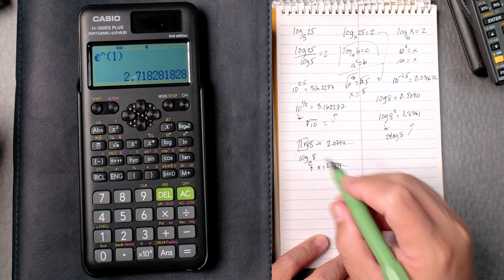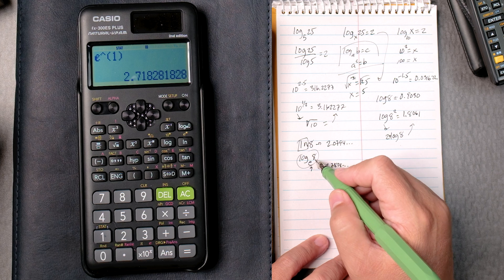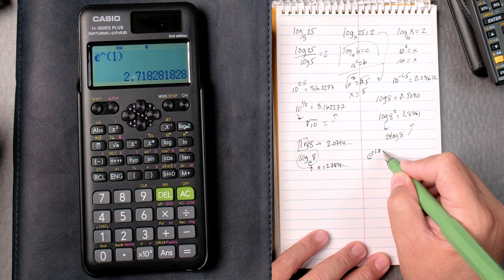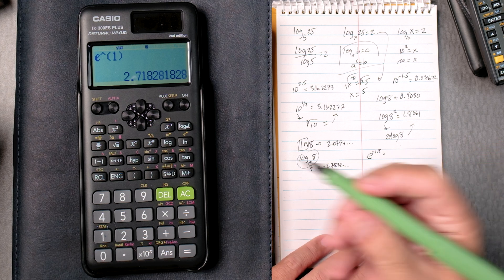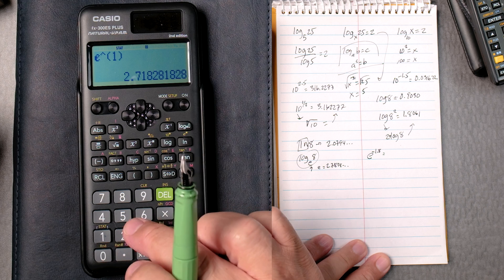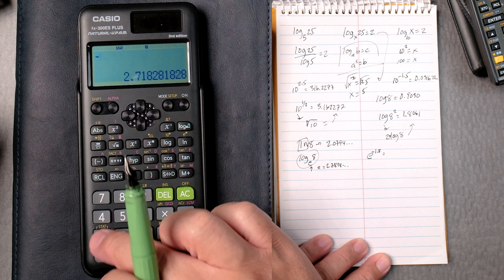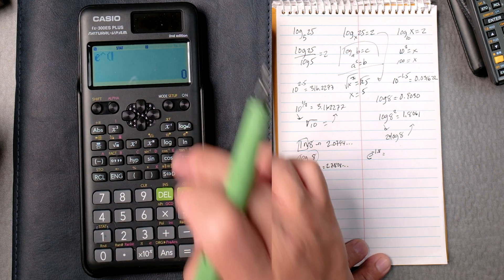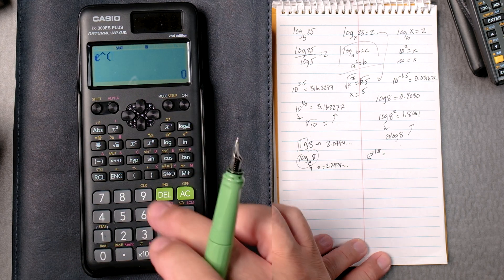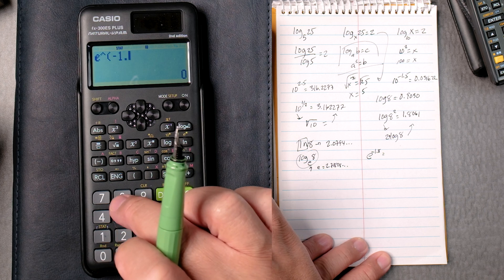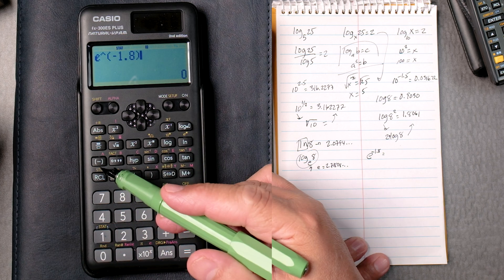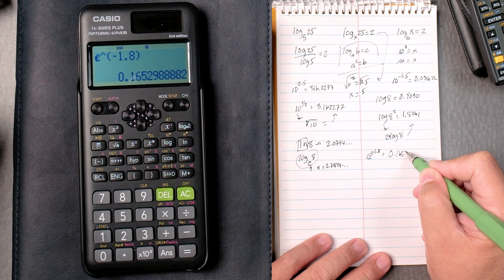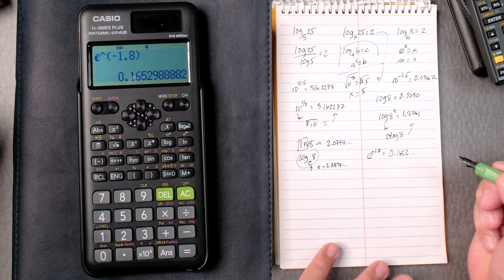So natural log of 8 is really the log of base E to the 8. E to the negative 1.8. You might encounter that. That's over here again. E to the blank. So we go negative 1.8. Sorry about that. Shift. E. Then negative 1.8. Close it. Don't forget it's the plus or minus key. Equals. We got 0.1652. Good. It keeps on going.